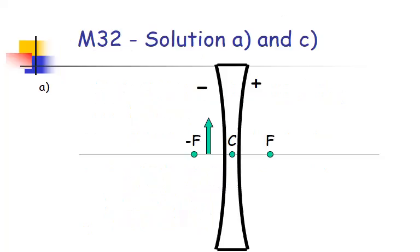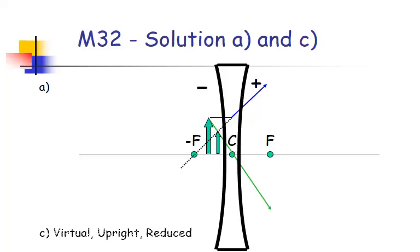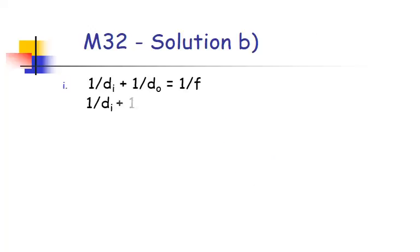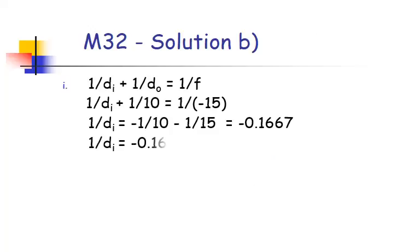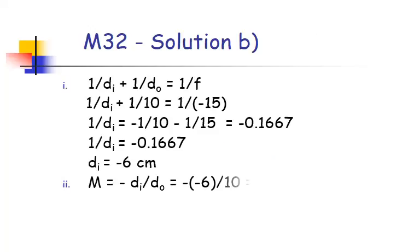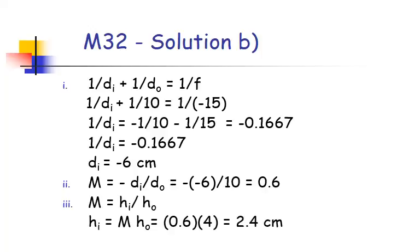So parallel ray, center ray, and then they're both diverging — tracing back. So virtual, upright, and reduced image. For our calculation, we should get negative 6 centimeters, magnification of 0.6, and a height of 2.4 centimeters.